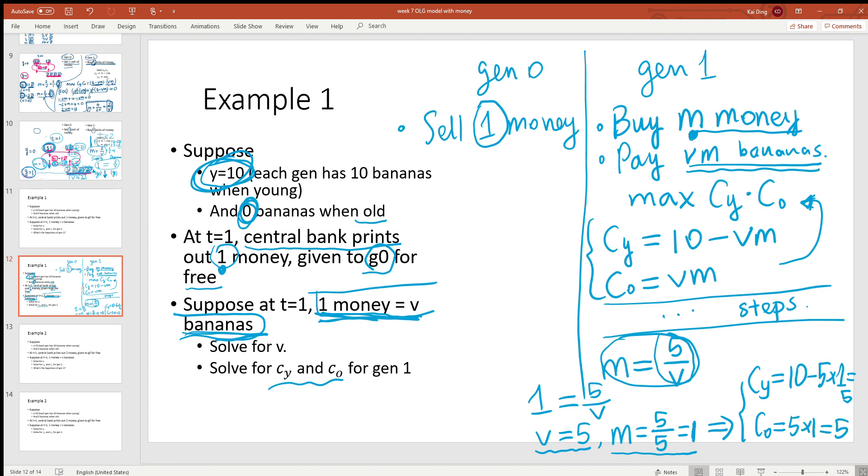So in equilibrium, generation one, although their endowment is 10 bananas when young and zero when old, they are going to eat 5 bananas when they are young and 5 bananas when they are old. Their happiness over their lifetime is 5 times 5, which is 25. So that solves this example.